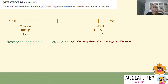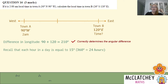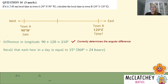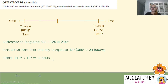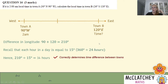That 210-degree difference in longitude is actually our first mark out of three — calculating the angular difference. Next, we recall that each hour is worth 15 degrees because the Earth does a full rotation of 360 degrees in 24 hours. So every 15 degrees equals one hour. If we divide 210 degrees by 15 degrees we get exactly 14 hours. So there's a 14-hour difference between the two towns — that's our second mark.